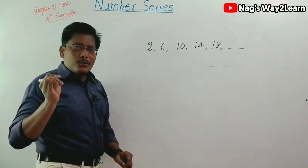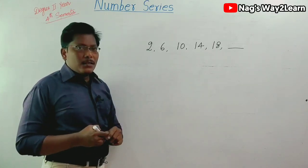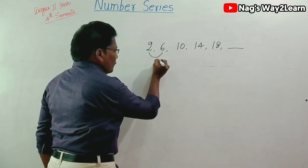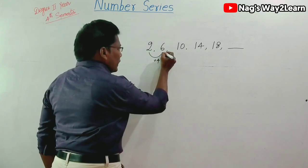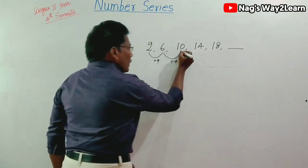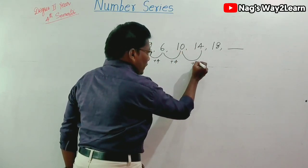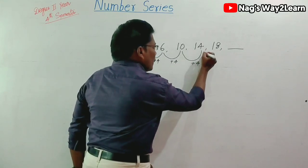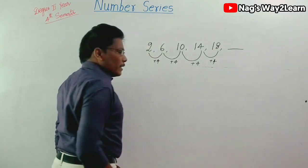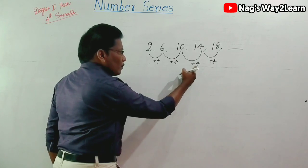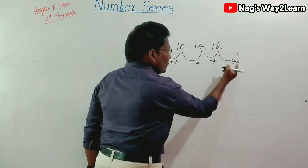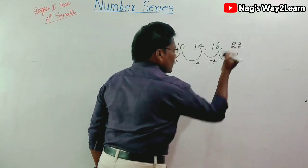To find the next number, we have to establish the relationship between the numbers. If you observe, 2 becomes 6 — adding 4. 6 becomes 10 — adding 4. 10 becomes 14 — adding 4. 14 becomes 18 — adding 4. So the pattern is +4 each time, and obviously the next one is also +4. So 18 plus 4 is 22. The answer is 22.